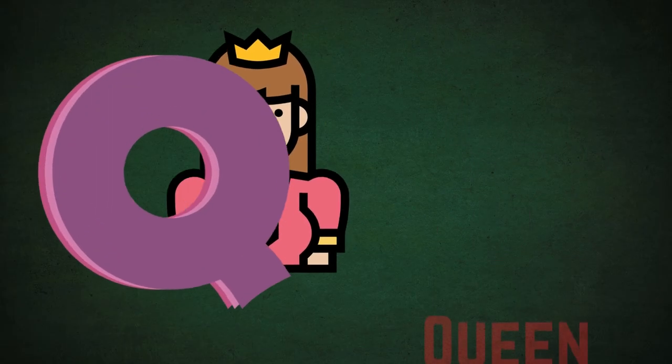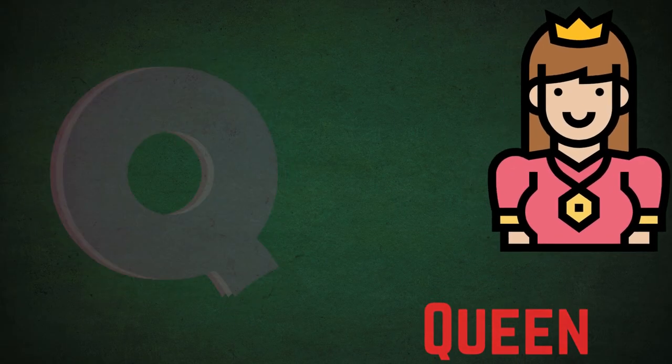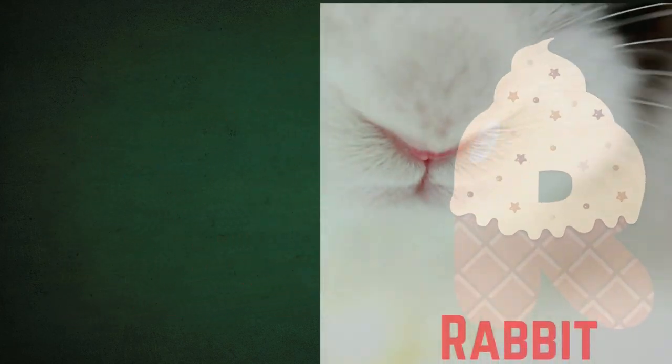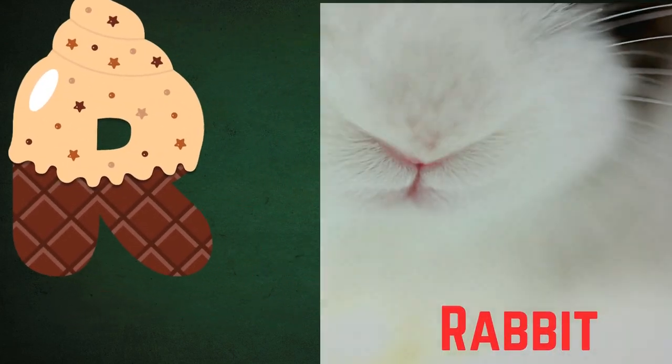Q is for Queen, Q-Q-Queen. R is for Rabbit, R-R-R-Rabbit.